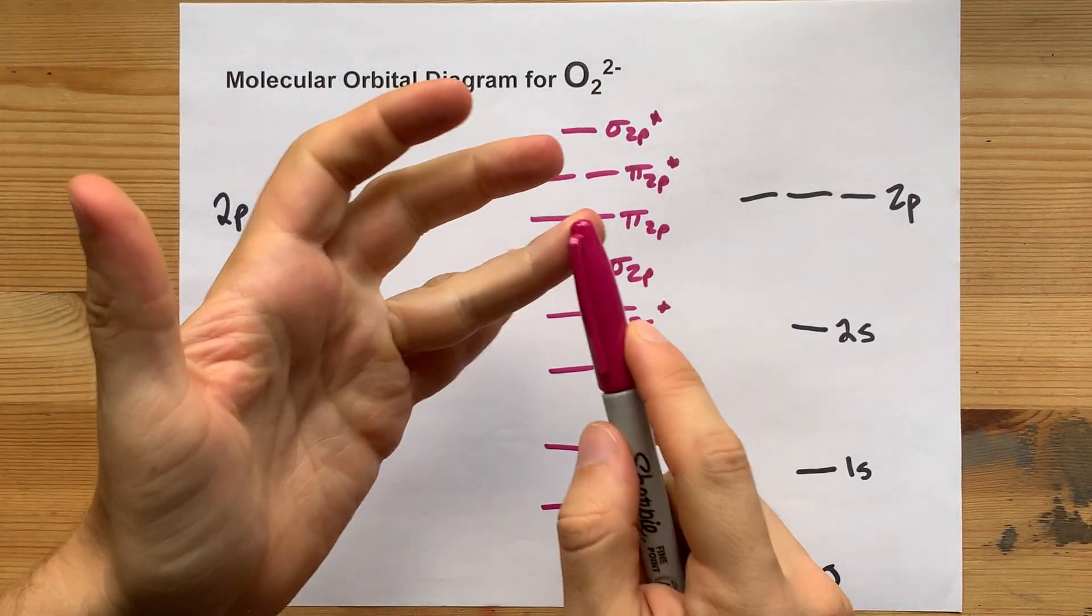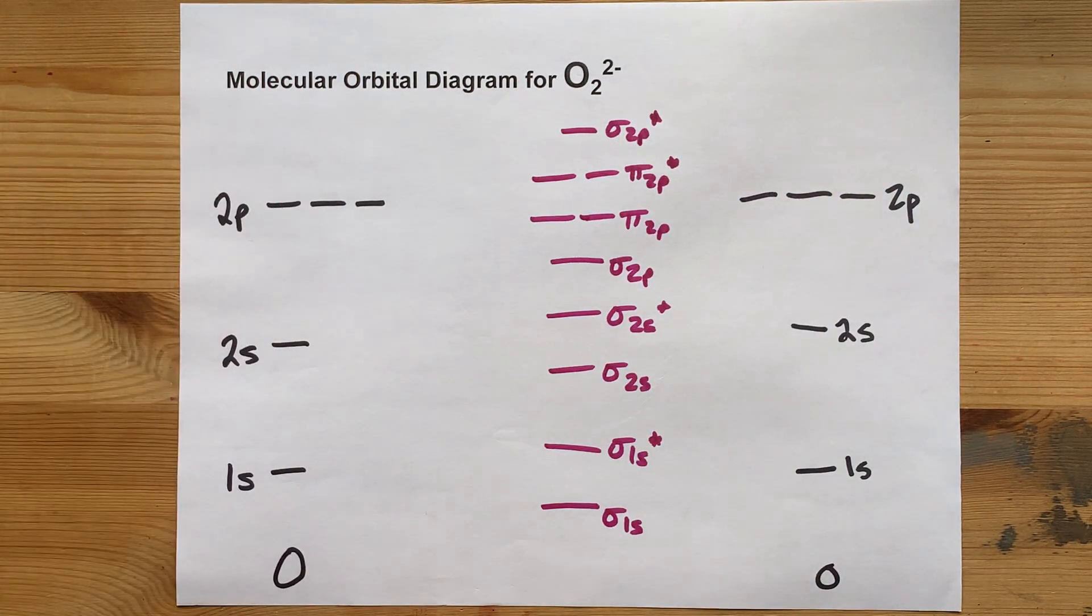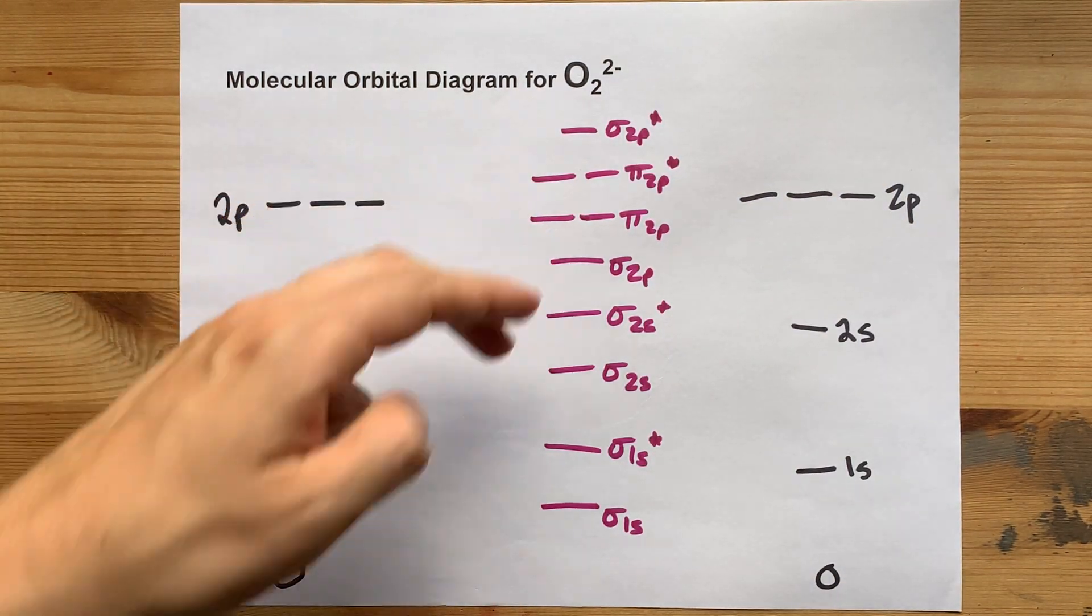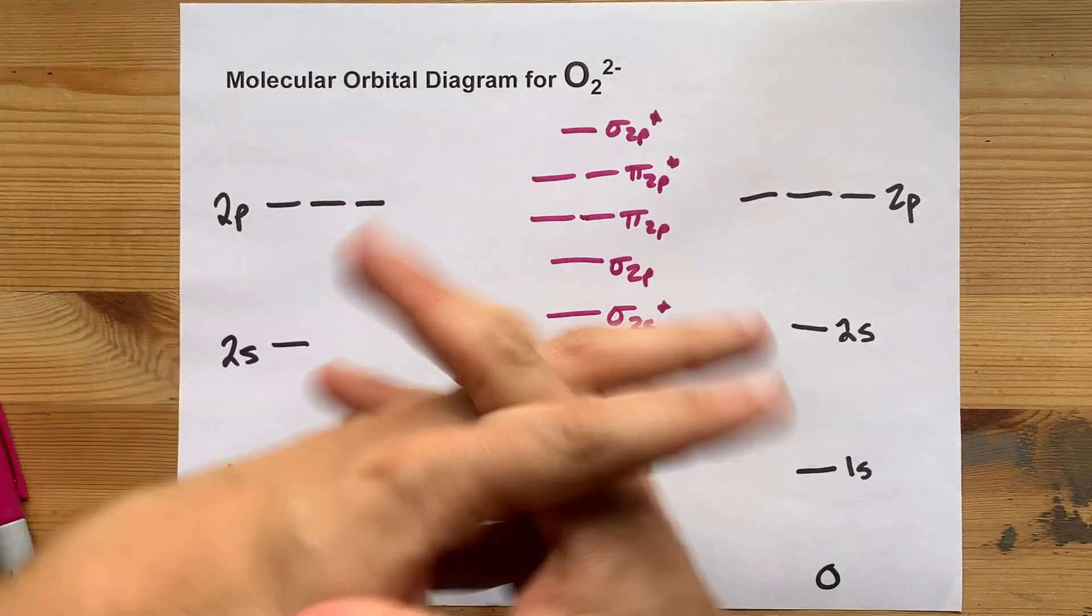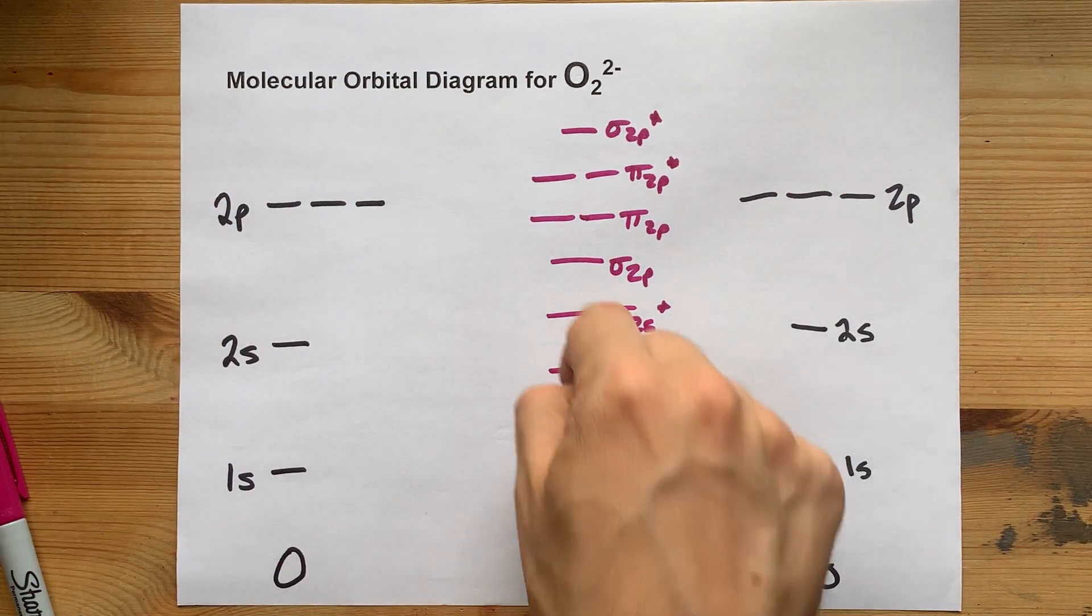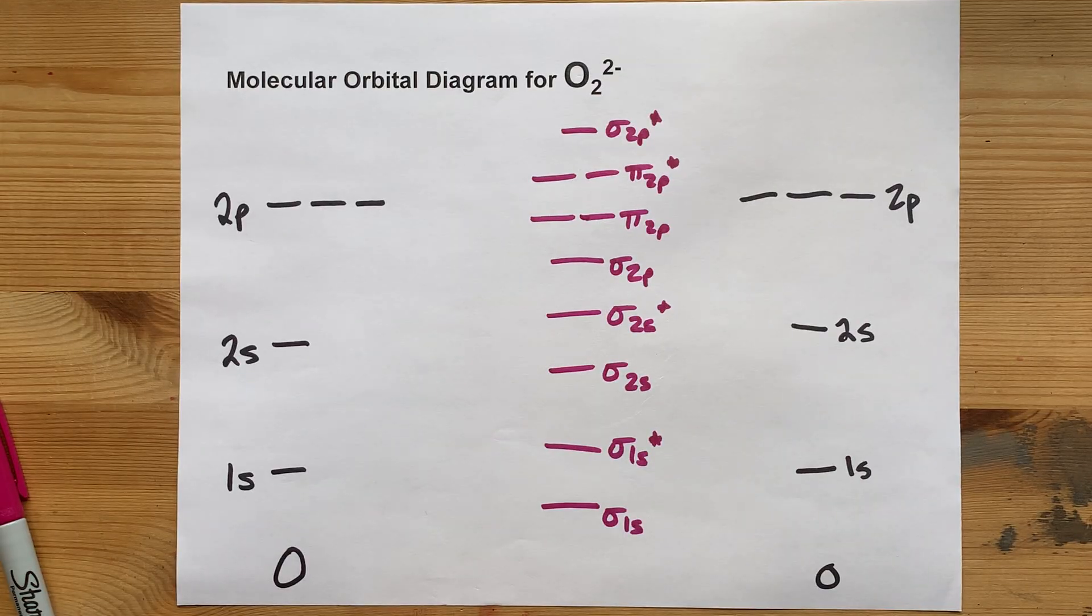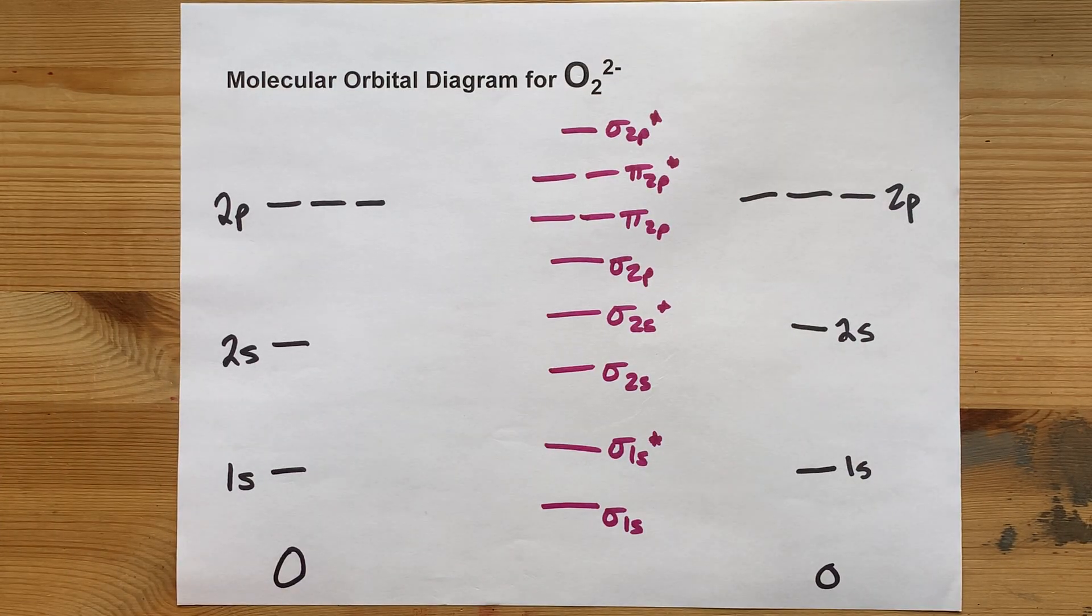For boron, carbon, nitrogen, anything before oxygen, these two are actually flipped. That's due to the atomic radius of oxygen and the effective nuclear charge that these orbitals are feeling. That's neither here nor there.